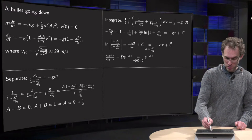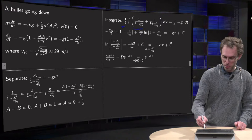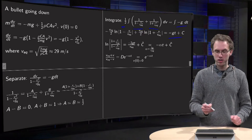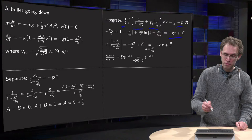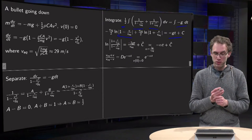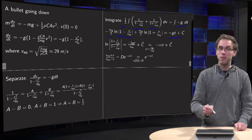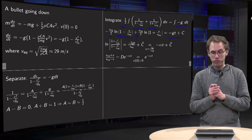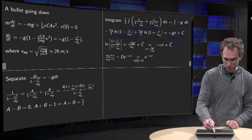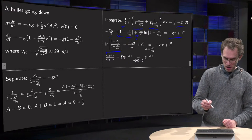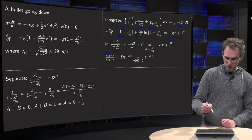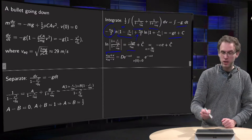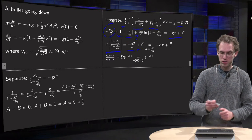So we integrate, taking the one-half in front: we get (1 over (1 minus v/v_equilibrium)) plus (1 over (1 plus v/v_equilibrium)) on the left, equaling the integral on the right-hand side — which is trivial. The left-hand side integral requires care: the first term gives the log of (1 minus v/v_equilibrium) with the one-half and the minus v_equilibrium factor, and the other similarly but with a plus sign. We want to solve for v.